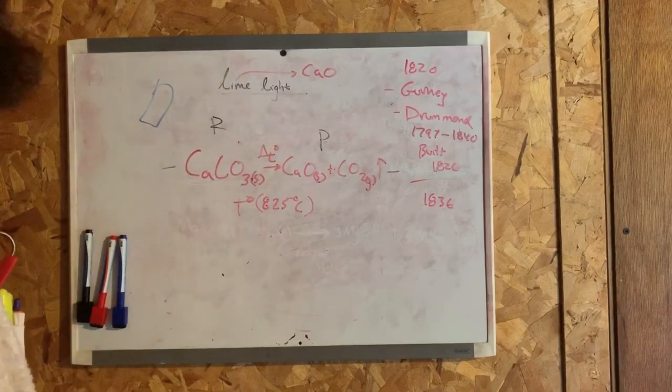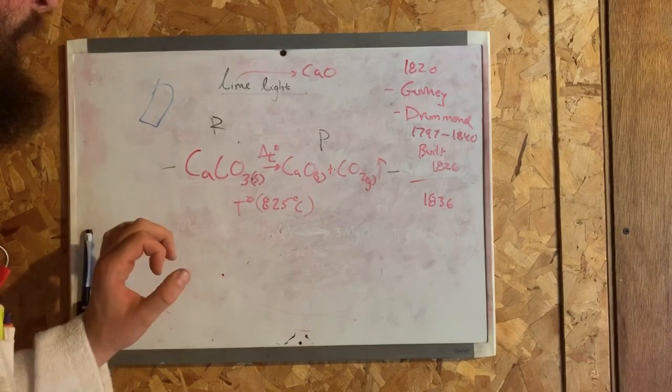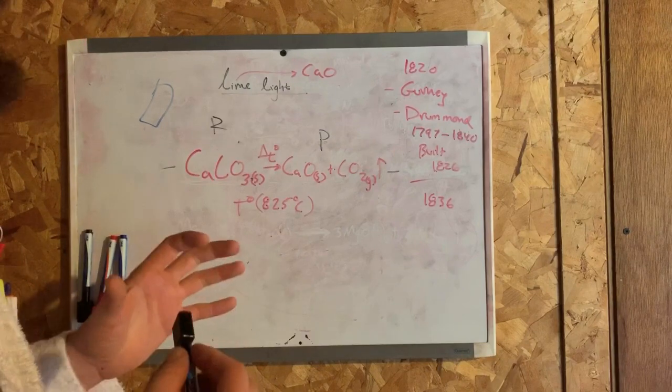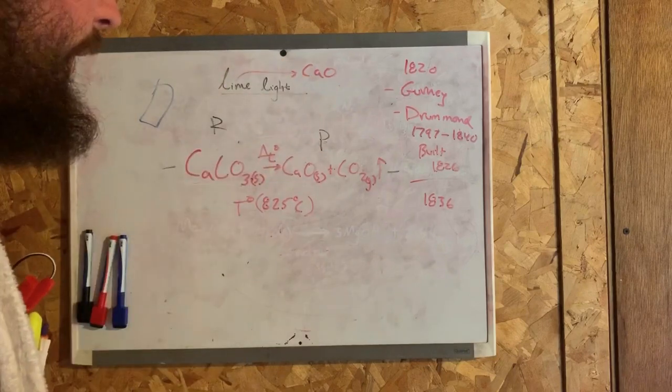The reagent is calcium carbonate, which is a piece of chalk that I have. In essence, I'm going to take chalk and convert it into lime, which is calcium oxide.